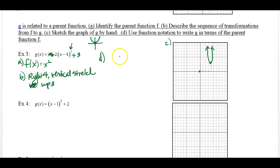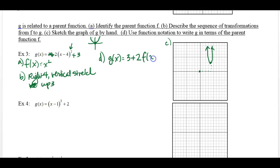Now part D: use function notation to write g in terms of the parent function. So we rewrite g of x as 3 plus 2 times f of x minus 4 — where f of x minus 4 means f evaluated at x minus 4 squared. That's how you write part D.